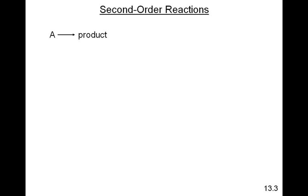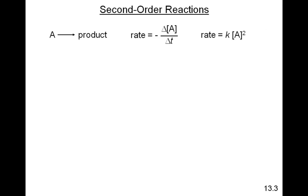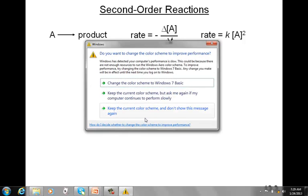So again, a very simple reaction — one reactant forming a product — and of course we know that the rate of this reaction is equal to minus the change in the concentration of A over the change in time. Because this is a second order reaction, the rate is also equal to the rate law constant K times the concentration of A squared. So this is a second order reaction, or it's second order in A. In other words, as the concentration of A doubles, the rate will quadruple, because we have to square A. Or if it triples, then the rate is nine times greater.